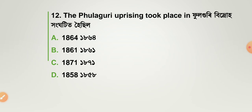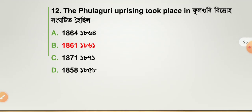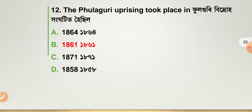The Fulguri Uprising took place — your answer is option number B: 1861.